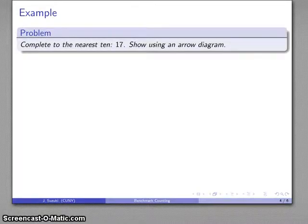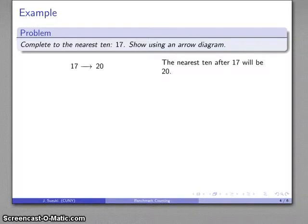And so, for example, I might have a number like seventeen. I want to complete it to the nearest ten, and so the nearest ten after seventeen is going to be twenty, and so I know I'm going to go from seventeen to twenty.